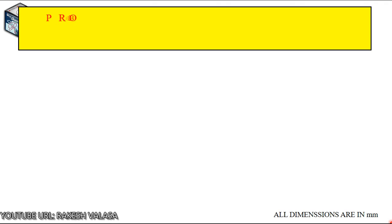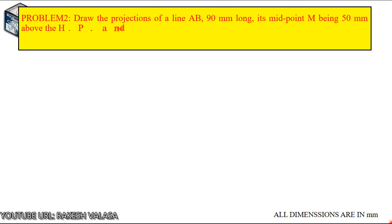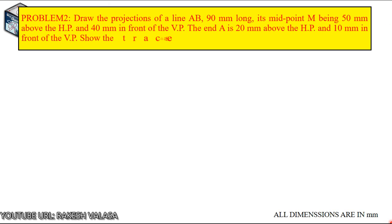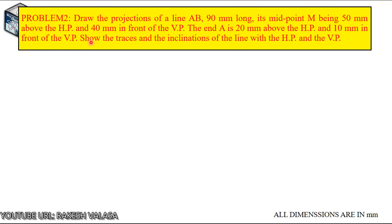Let us see problem number 2. The given problem is: draw the projections of a line AB 90mm long. Its midpoint M is 50mm above the HP and 40mm in front of the VP. The end A is 20mm above the HP and 10mm in front of the VP. Show the traces and the inclination of the line with the HP and VP.